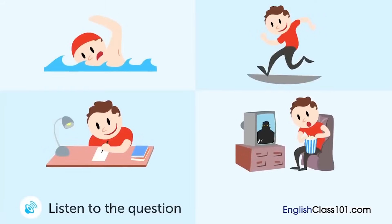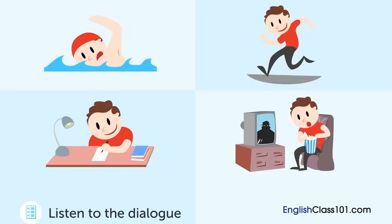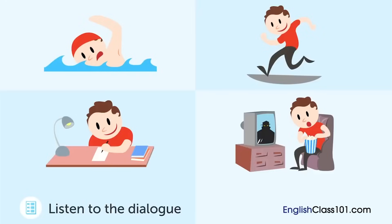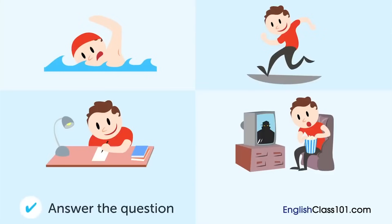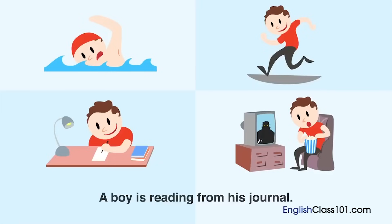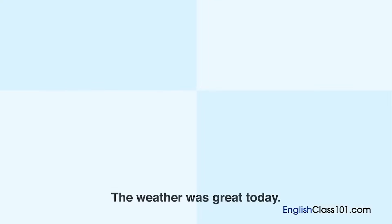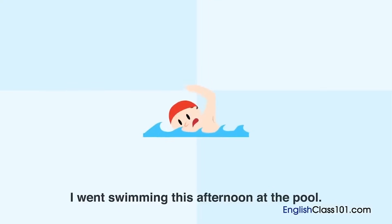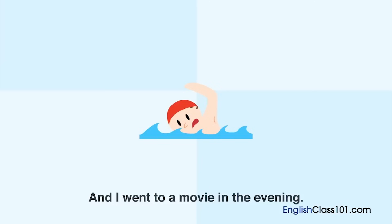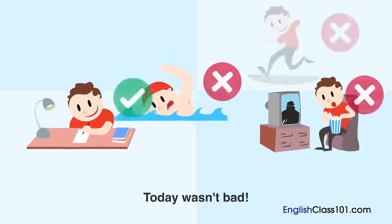A boy is reading from his journal. What was the first thing the boy did today? — 'The weather was great today. I went swimming this afternoon at the pool, and I went to a movie in the evening. I also studied all morning. Today wasn't bad.'